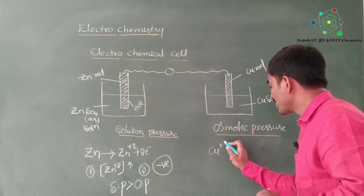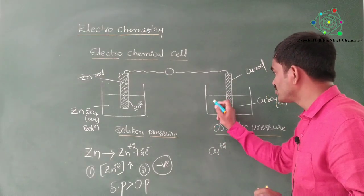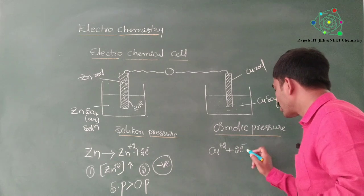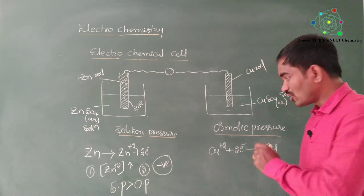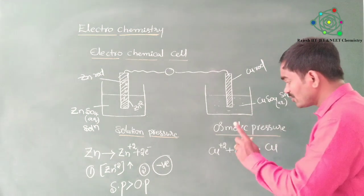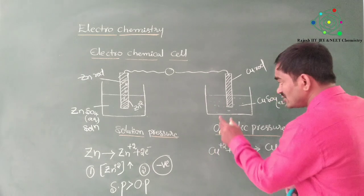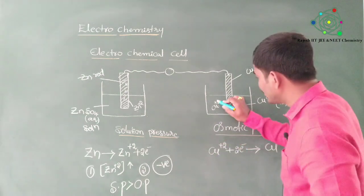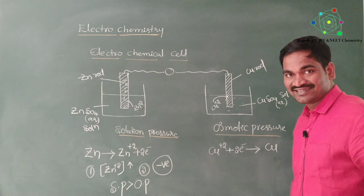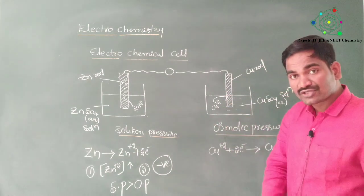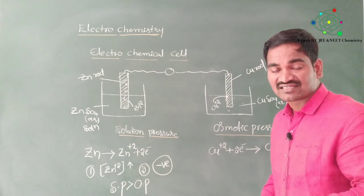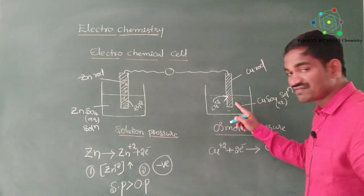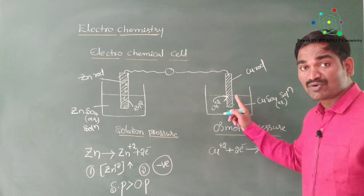Metal ions which are present in the copper sulfate solution take electrons and become copper — this is nothing but reduction. The Cu²⁺ ions present in the solution are coming out of the solution, and while migrating from solution outward, some pressure is produced. That pressure is called osmotic pressure. In this half cell, osmotic pressure is dominating.